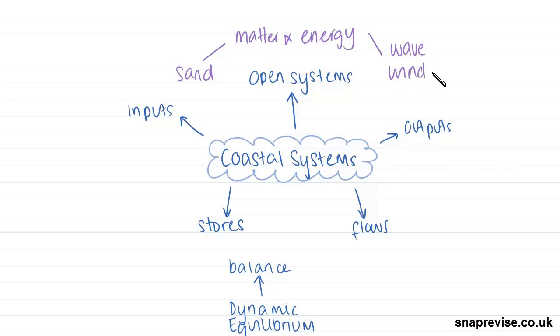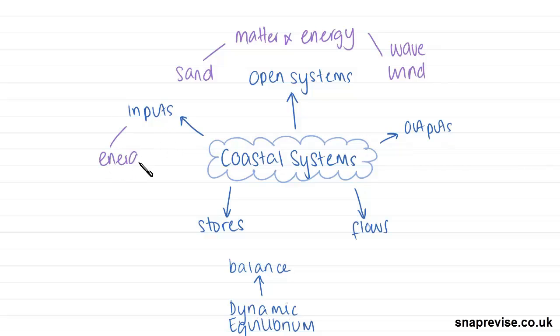This leads us on to the inputs in coastal systems, which are things like energy. So we have wind energy, wave energy, tides and sea currents, to give you a few examples of inputs.